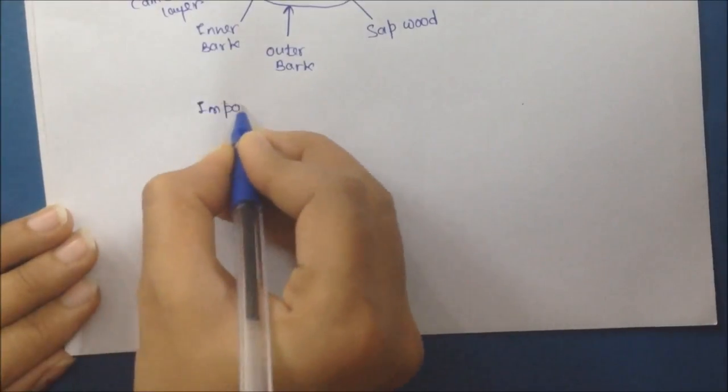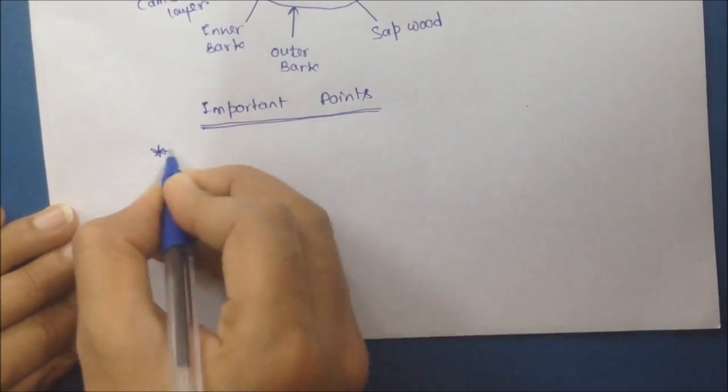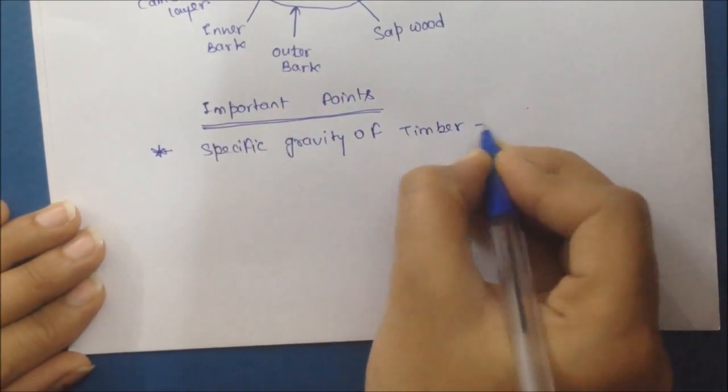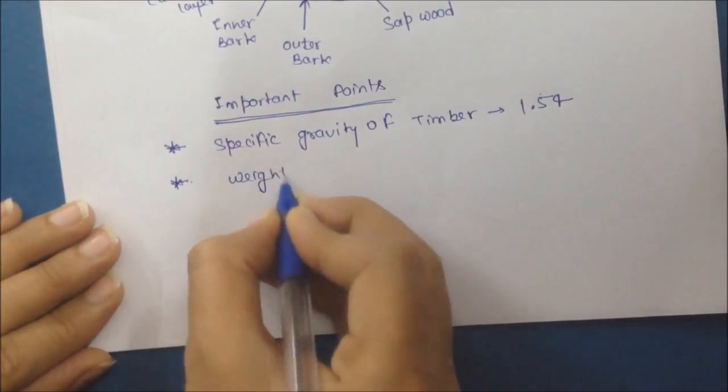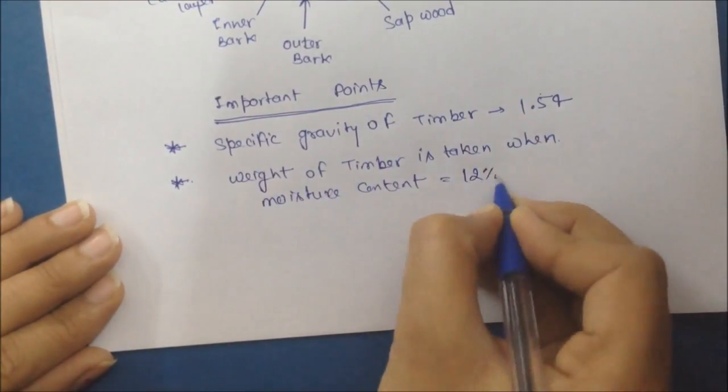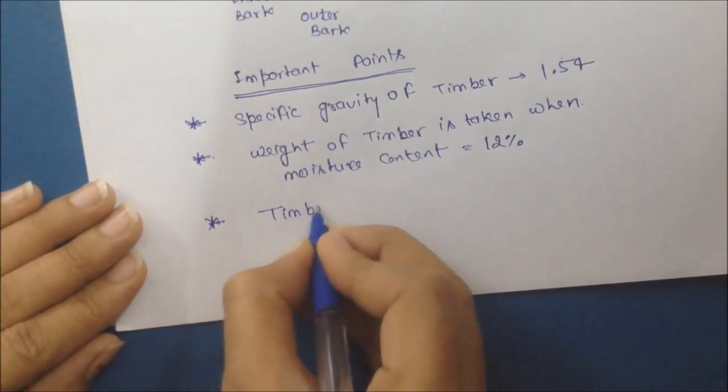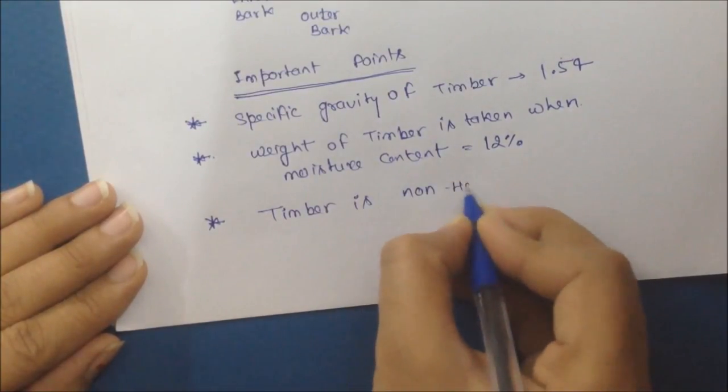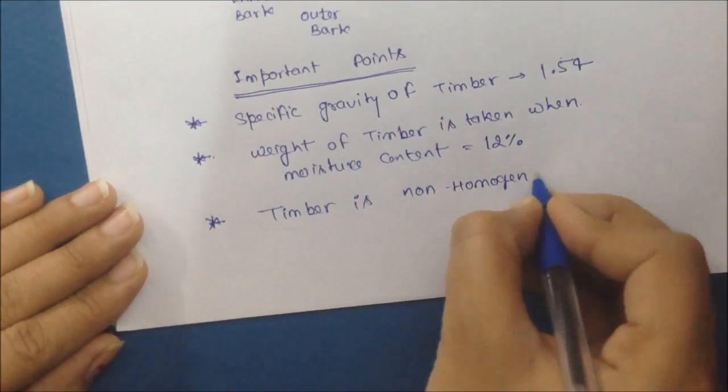Now some important points related to timber. Timber's specific gravity is 1.54. And we measure timber's weight when it contains 12% of moisture content. And third is timber is non-homogeneous and anisotropic. It means timber's different direction has different properties.